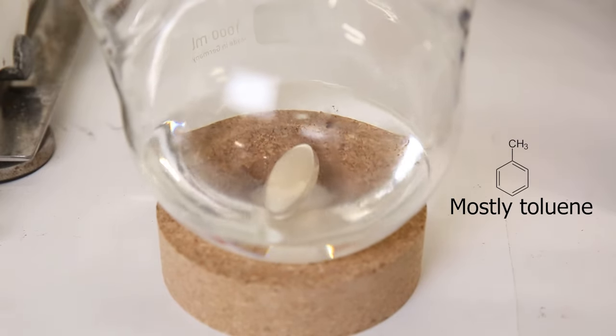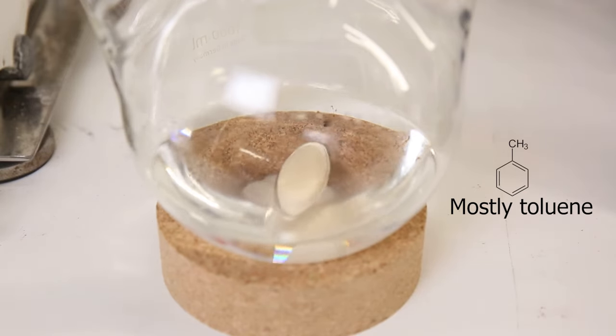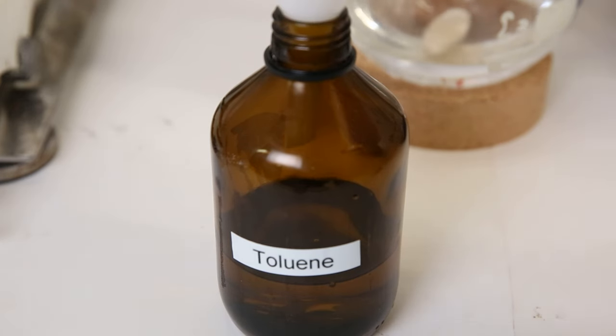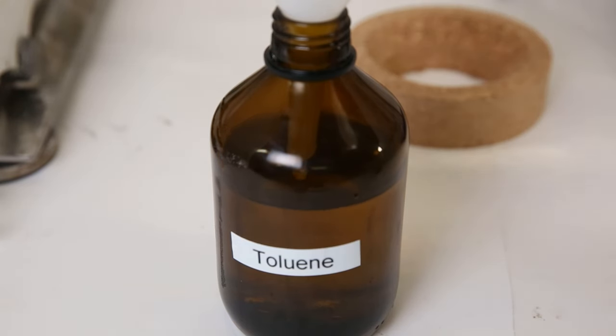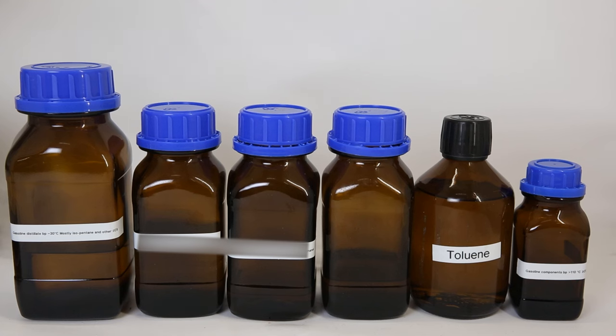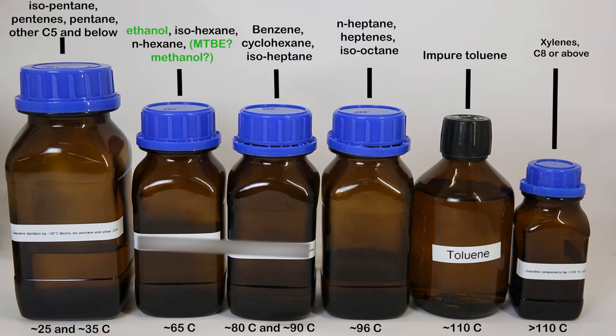Now it is not necessary to boil all of the rest. I will just add the remaining liquid to my impure toluene bottle. In the end, I created six different fractions of the gasoline.